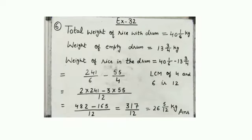Next question, question number 6. Look at your book. A drum full of rice weighs 40 1/6 kg. If the empty drum weighs 13 3/4 kg, find the weight of rice in the drum.